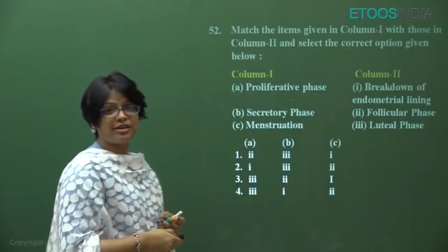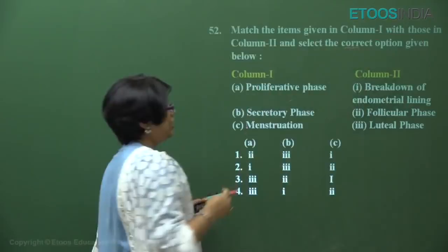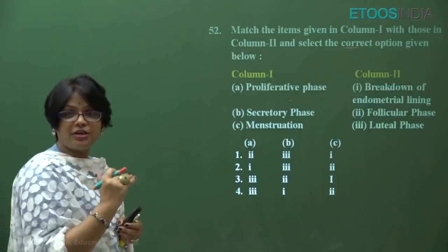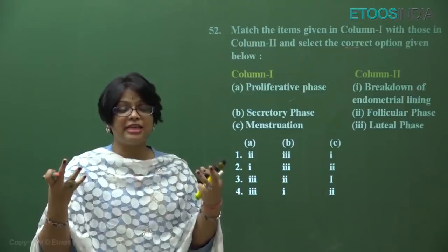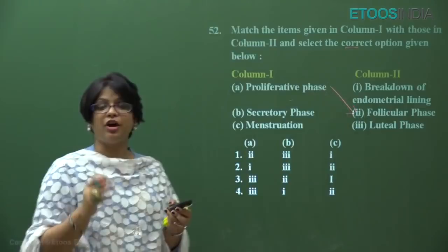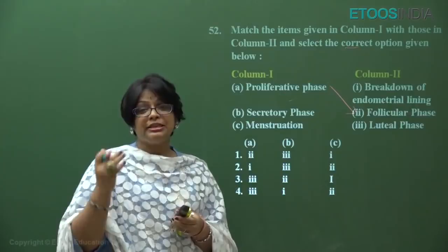Question number 52: match the menstrual cycle phases. The menstrual cycle has three main phases. In the first phase, follicle development occurs in the ovary — maturing to form the dominant Graafian follicle — while in the uterus there is proliferation of endometrium. So the proliferative phase is also called the follicular phase. After complete maturation of the Graafian follicle, ovulation occurs due to the LH surge.